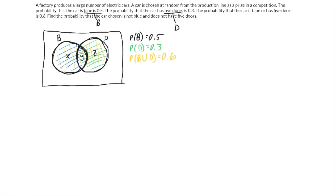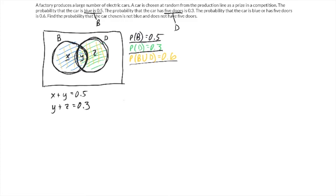What I'd like to do is show you how to mathematically solve it because you won't always get numbers that are quite as nice as this. I'm going to label each section. This section — just B, not the whole B — that's going to be X. This middle section is Y. And then the section that is D but not the intersection is Z. So I can now say: the probability of B is 0.5, which means X plus Y equals 0.5. And D is 0.3, so Y plus Z equals 0.3. And B union D is 0.6, so X plus Y plus Z equals 0.6.